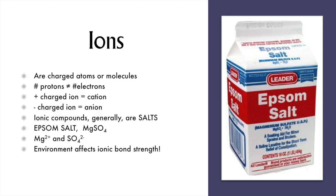When protons and electrons are not equal in an atom or molecule, what you have is an ion. Positively charged ions are called cations, and negatively charged ions are anions. Why do we call sodium chloride table salt in the classroom and just salt at the dinner table? Because in the classroom and laboratory, salt can refer to any ionic compound. Epsom salt, for example, is magnesium sulfate, MgSO4, comprised of the cation Mg2+ and the sulfate anion SO4²⁻. Notice that the sulfate ion is five covalently bonded atoms that have two extra electrons.